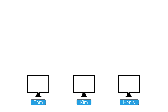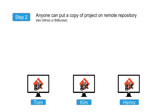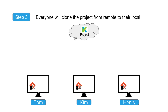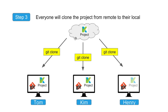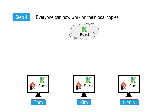Let's look at the steps in detail. Step one: all members — Tom, Kim, and Henry — install Git on their systems. Step two: any one of them puts their project onto a remote repository like Bitbucket or GitHub. Step three: everyone clones the project from the remote repository using git clone, so Tom, Kim, and Henry each get a local copy of the project.